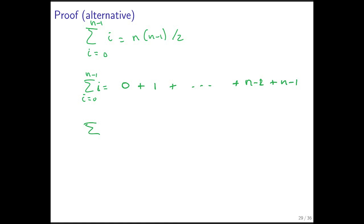And the sum from i equals 0 to n minus 1 is also equal to 0—this is a 2 here—plus 1 plus dot dot dot plus n minus 2 plus n minus 1.